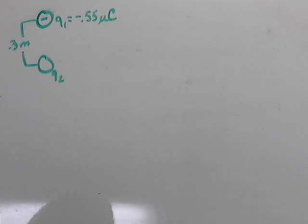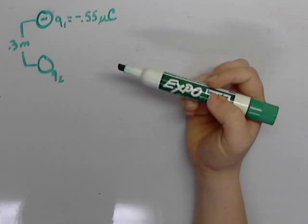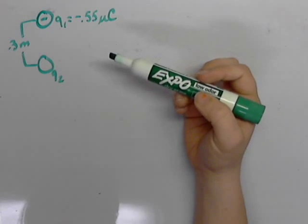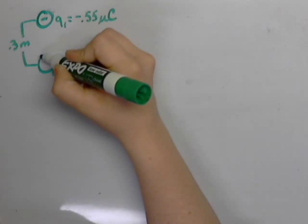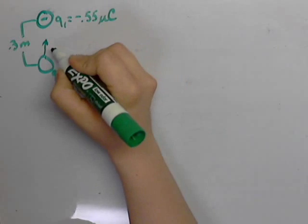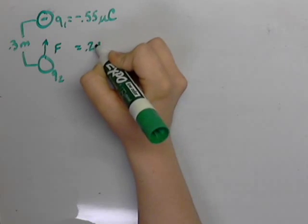Chapter 21, question 14. I've drawn out a negative charge of negative 0.55 microcoulombs, and that is exerting an upward force on Q2, the unknown charge, which is equal to 0.2 newtons.